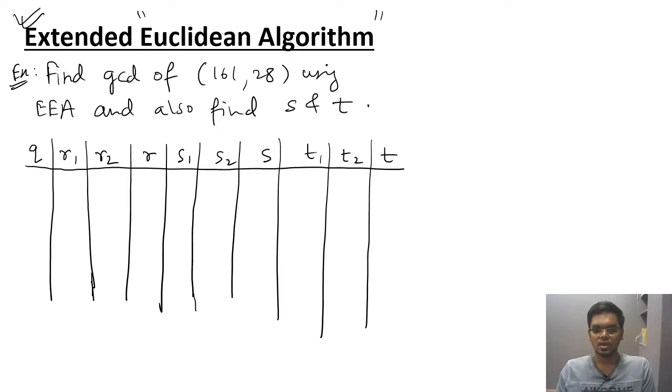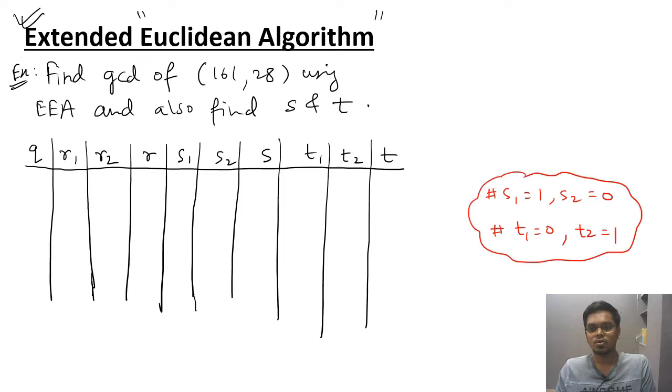What is the assumption? Assumption is S1 is 1, S2 is 0, and T1 is 0 and T2 is 1. This is standard assumption given by the Extended Euclidean Algorithm books. So this is the standard assumption.